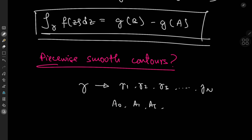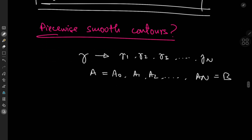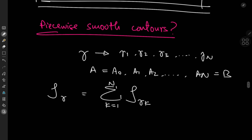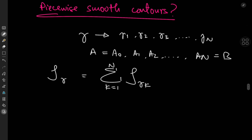Then the integral over gamma can be expressed as a sum over k from 1 to n of the integral over gamma sub k of f(z) dz.